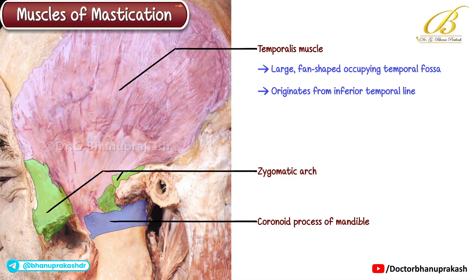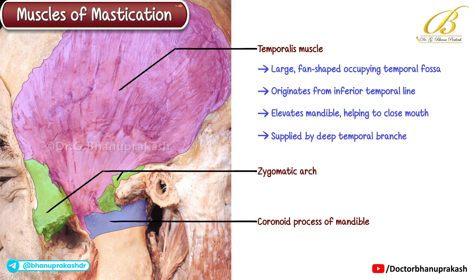The temporalis muscle elevates the mandible, helping to close the mouth. It is supplied by the deep temporal branches of the mandibular division of the trigeminal nerve.